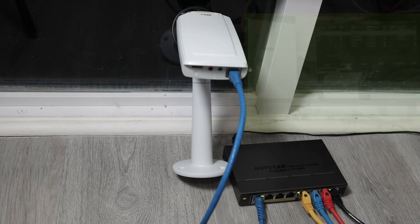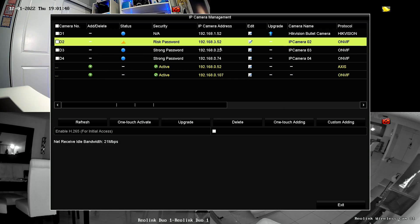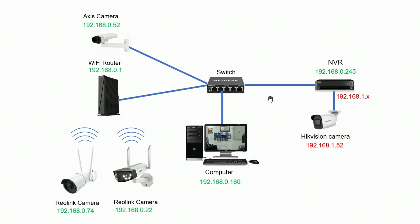The only problem I have with the Axis camera, when you look at the NVR, is the IP — it's not correct. I'm trying to use network 3 instead of network 0. Back to the diagram: everything connected to the switch must be on the zero network. My computer is at 192.168.0.160, and the Axis camera should be at 0.52. So the problem is it should be 0.52, not 3.